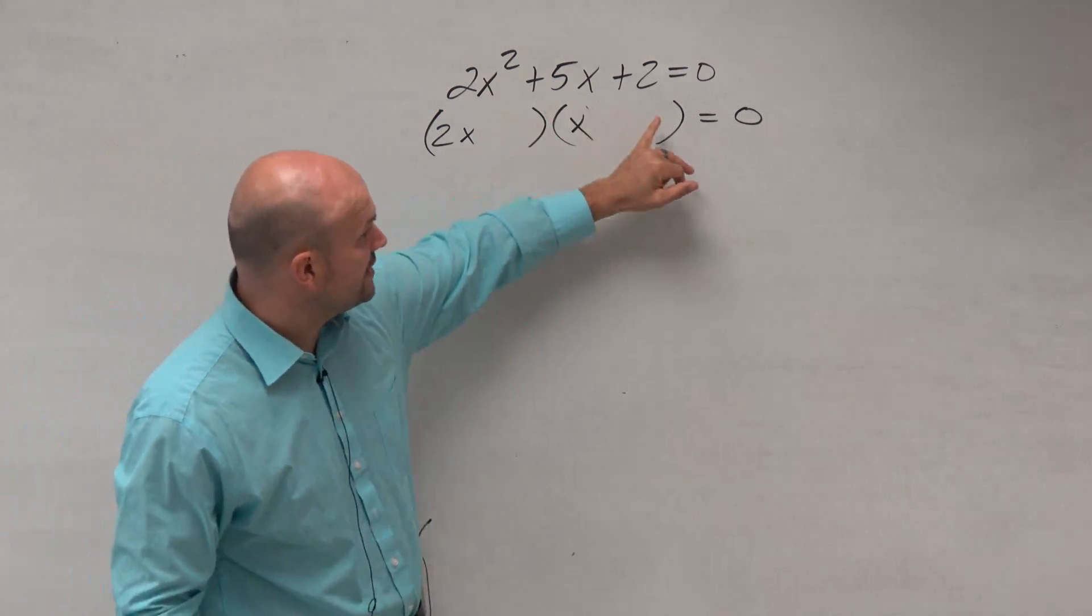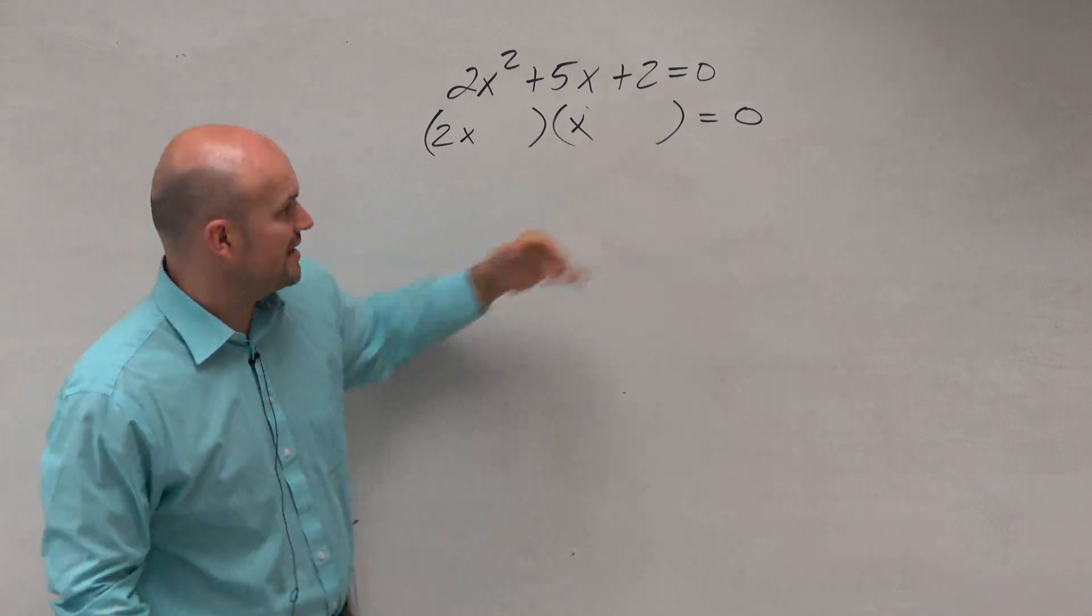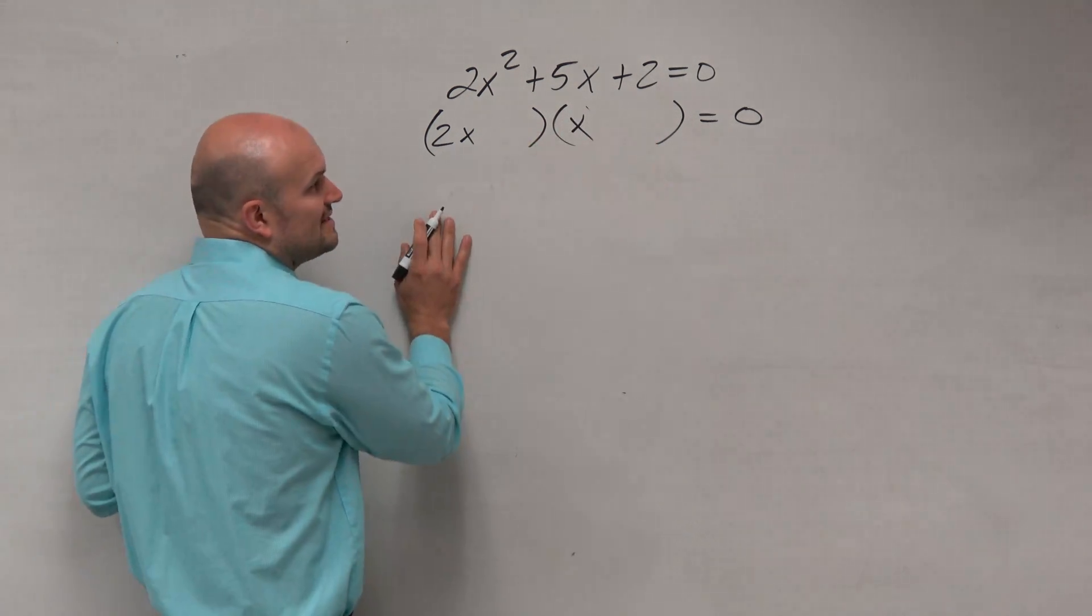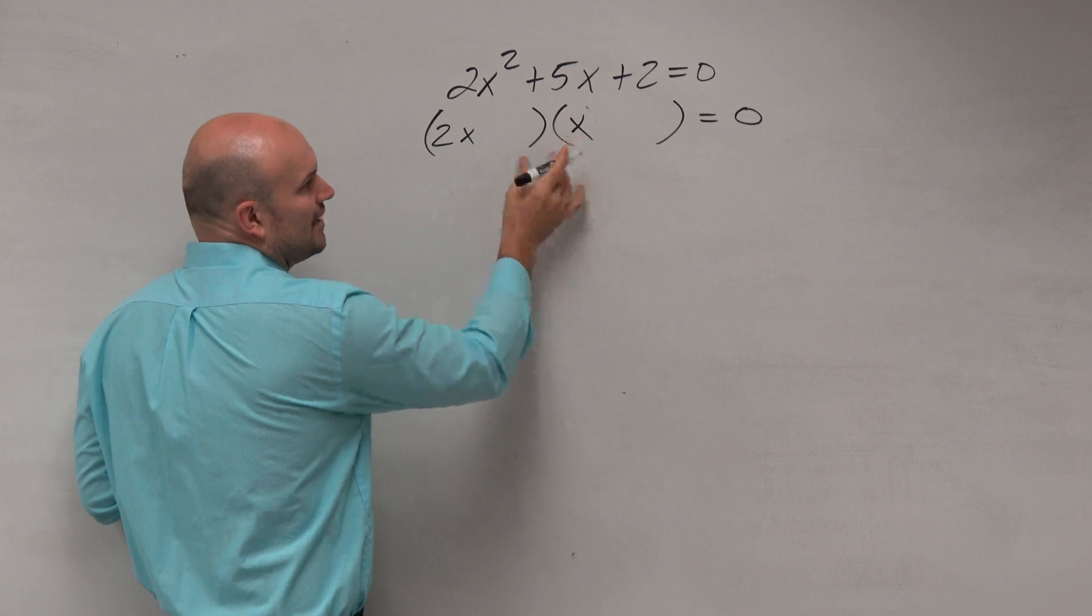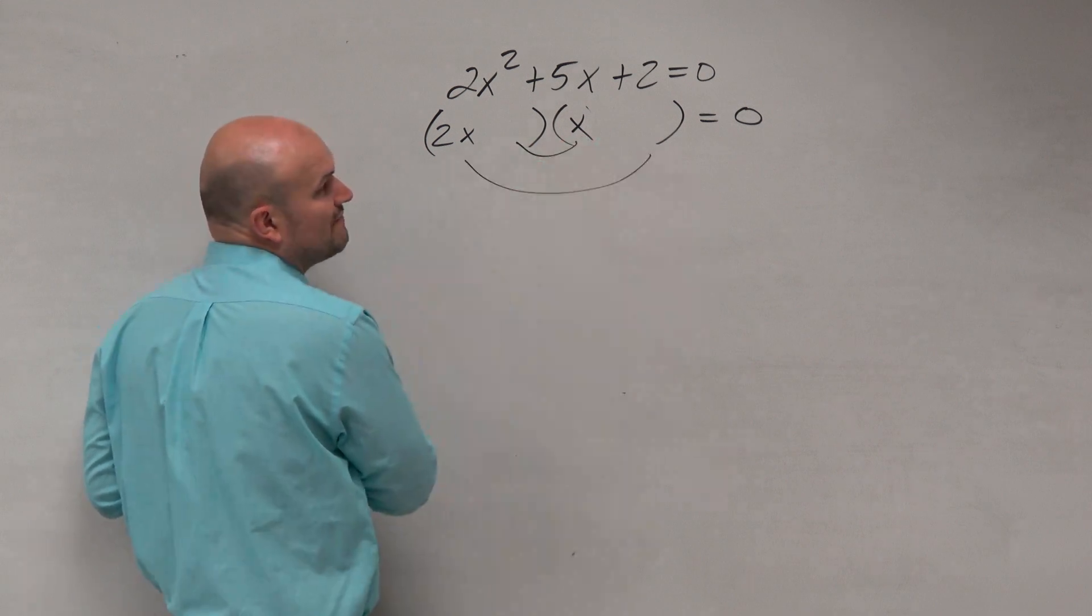Either a 2 is going to go here and a 1 there, or a 1 here and a 2 there. The main thing you need to think about is your inner and outer terms need to combine to give you 5x.